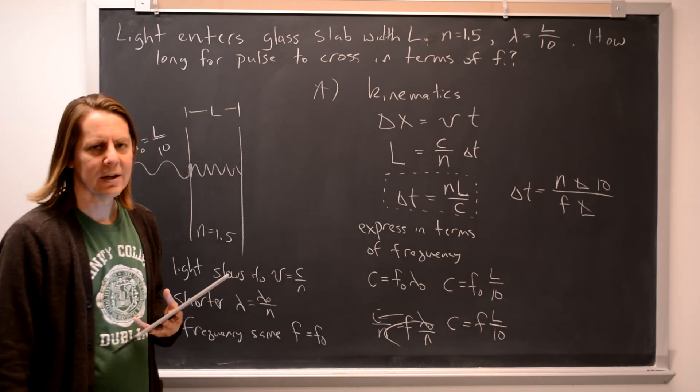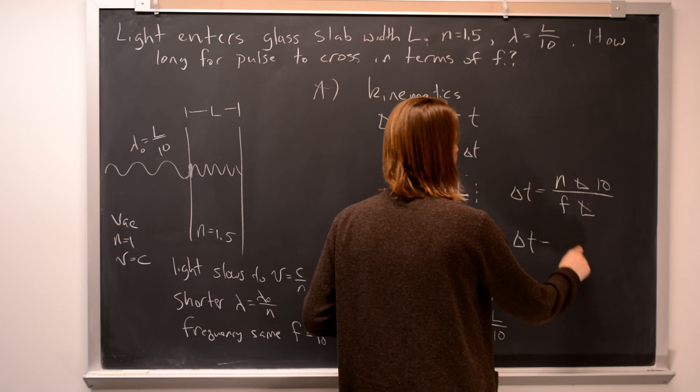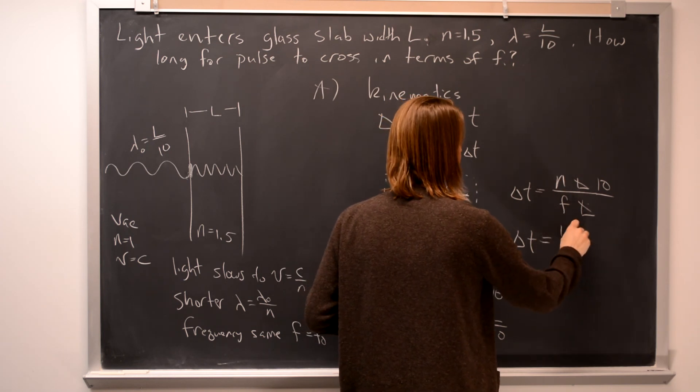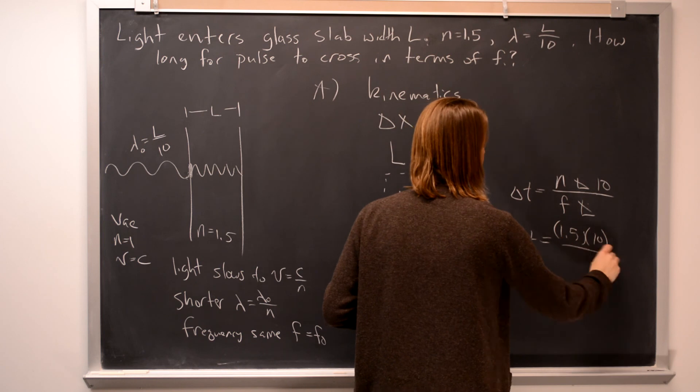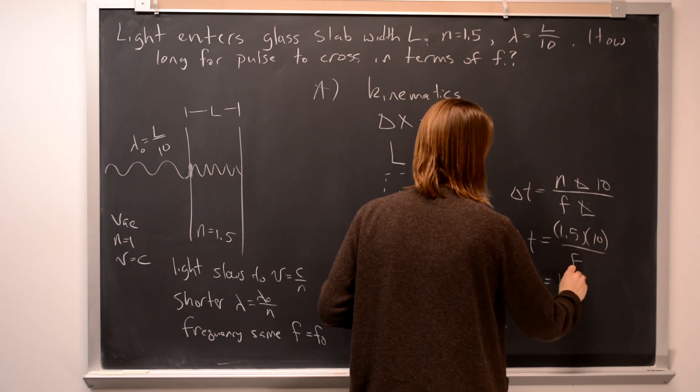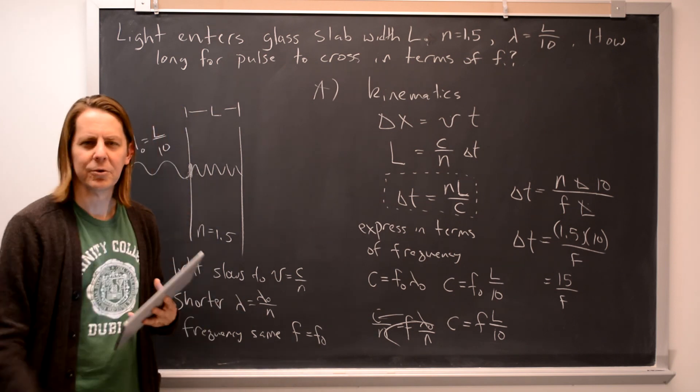Simultaneously, get rid of the C and get rid of the L. So in the end, for this silly problem, you get 1.5 from the index times 10 from the wavelength over F. The answer is just 15 over F. So much physical insight.